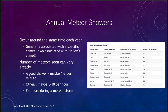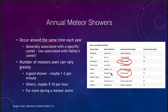Meteor showers occur on a regular basis — there are annual meteor showers that occur around the same time each year. Two of the better-known ones are actually associated with Halley's comet, one of the best-known comets. Those occur in May and then again in October, about six months apart, when we pass through those two portions of Halley's comet's orbit. At that time, Halley's comet is nowhere near the inner solar system, but we still see the showers because we're passing through debris left behind, possibly hundreds or thousands of years ago.